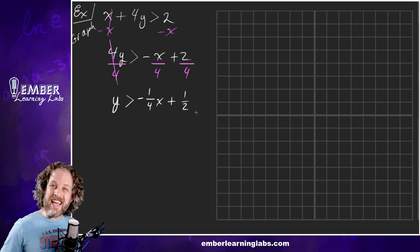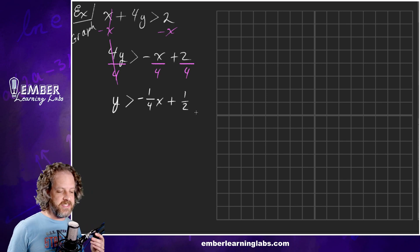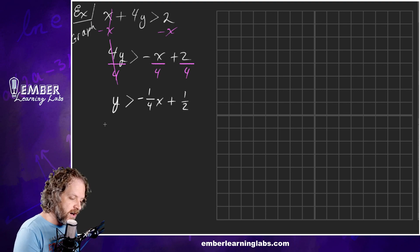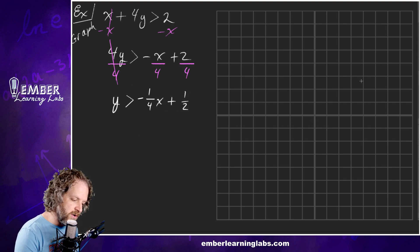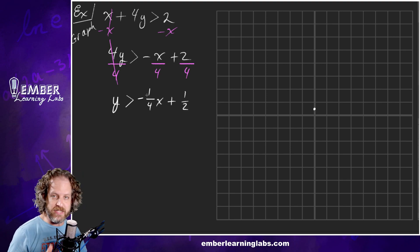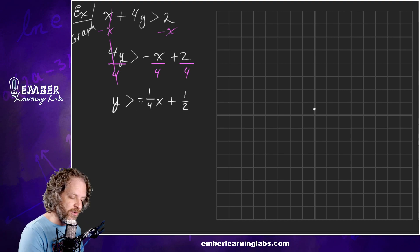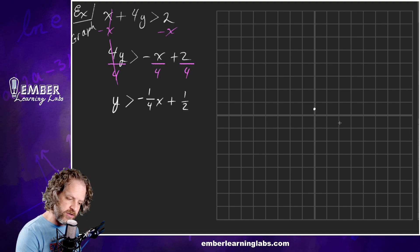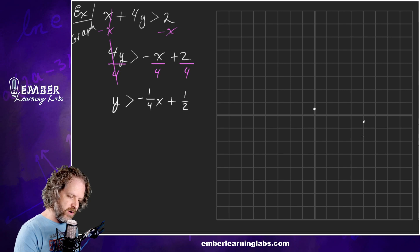So now we graph this the same way with one key exception. We're going to find our y-intercept of one half and graph that right there. Then we're going to count — down 1 and over 4. So down 1, over 1, 2, 3, 4. Down 1, over 1, 2, 3, 4. And then we're going to connect the dots.